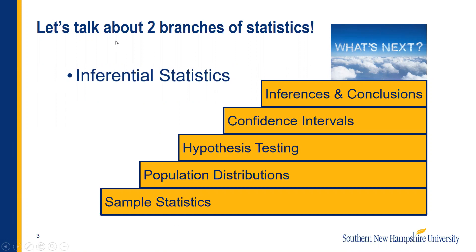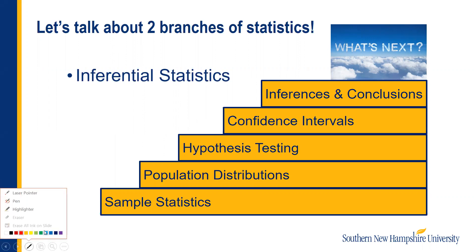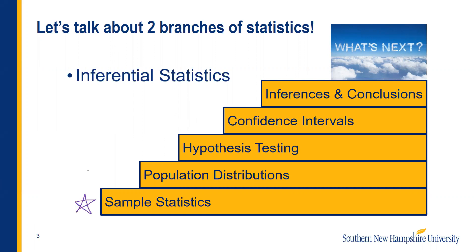There are a lot of different branches of statistics. We're going to talk about two of them. First is inferential statistics — that means that you're making inferences. We're going to start at the bottom, because statistics is like a building block of information or a staircase. When you're learning, you're probably going to learn sample statistics first and learn about what a sample is versus a population, so that you can build from there.